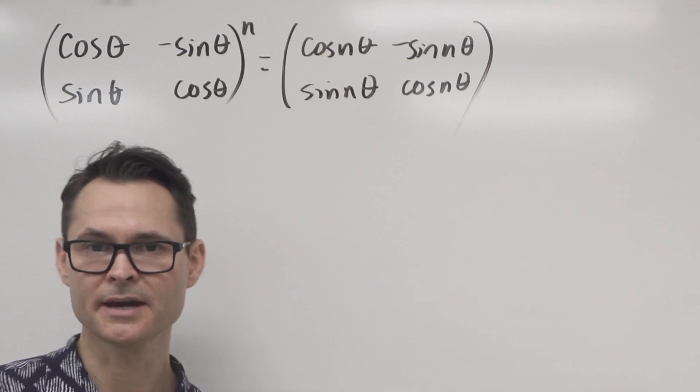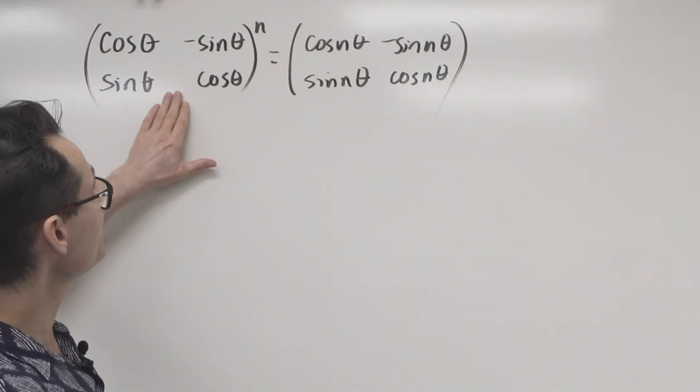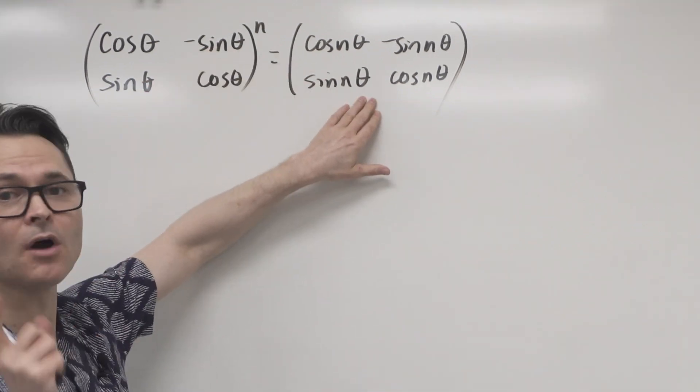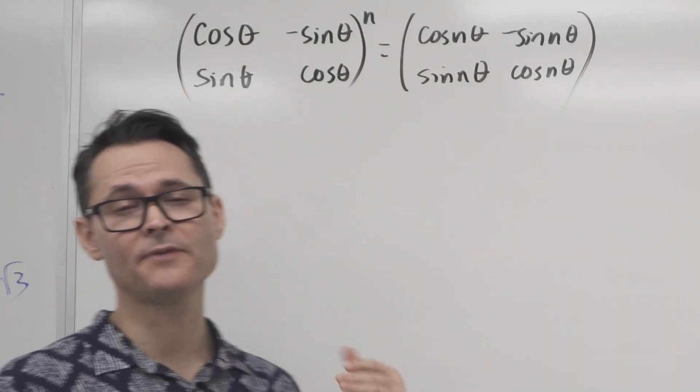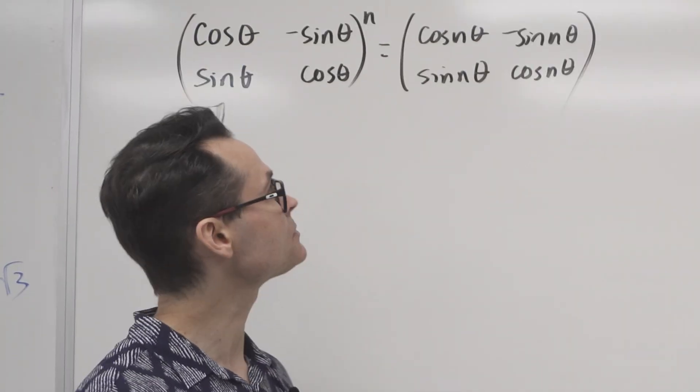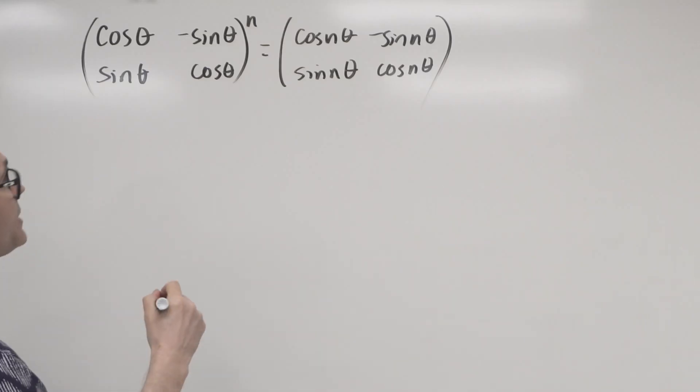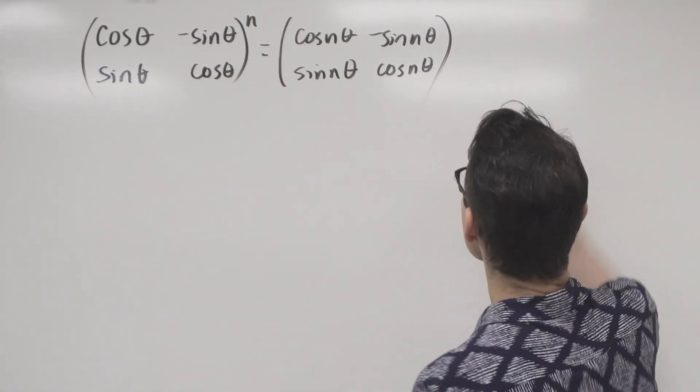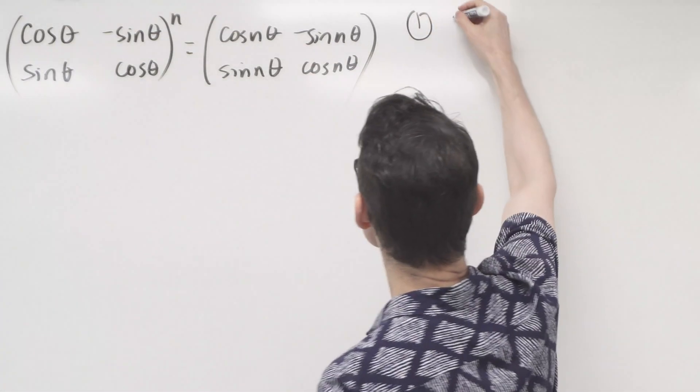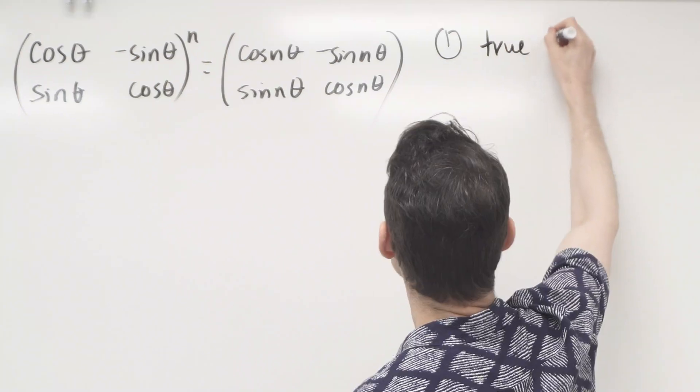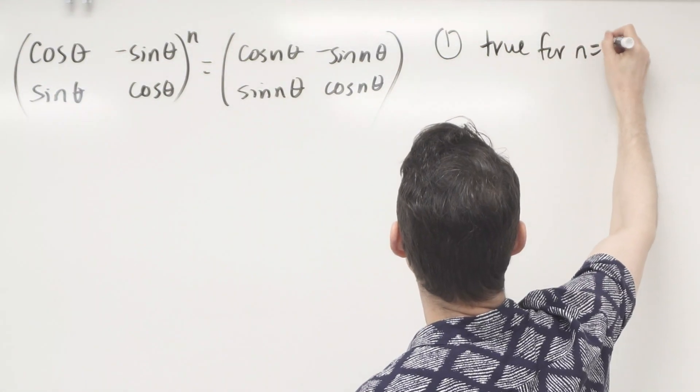So what we're going to do is use induction, proof by induction, to show that this is equivalent to that for all integers, all values of n that are integers. So I'm going to use induction to do this.